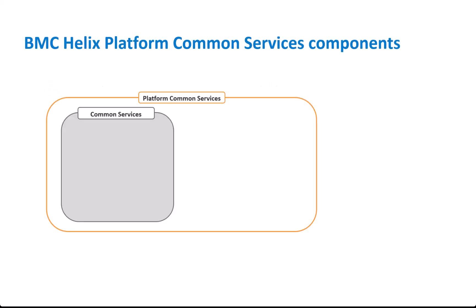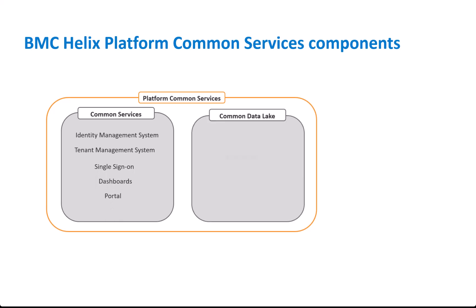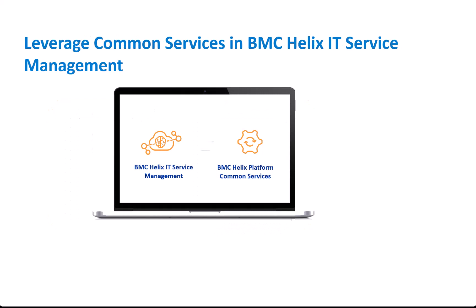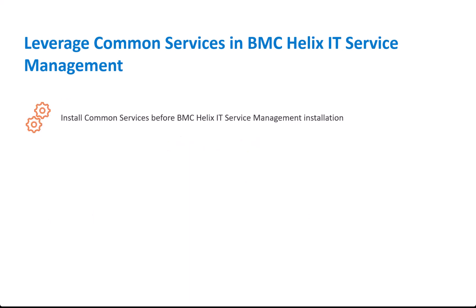BMC Helix Platform provides common services such as user management, tenant management, single sign-on, dashboards, and portal. It also provides a common data lake that contains components such as PostgreSQL, Elasticsearch, Min.io, Kafka Zookeeper, Redis, and dynamic service modeling. To use these services, you must install them before you install BMC Helix IT Service Management in your on-premises environment.